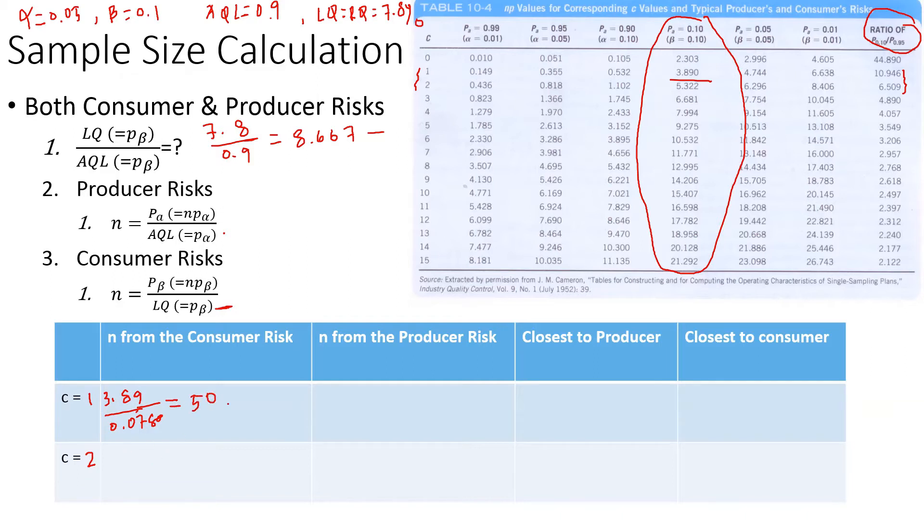Similarly, for C value 2, the NP value is 5.322. Divided by the LQ of 0.078, that gives us a sample size of 68.